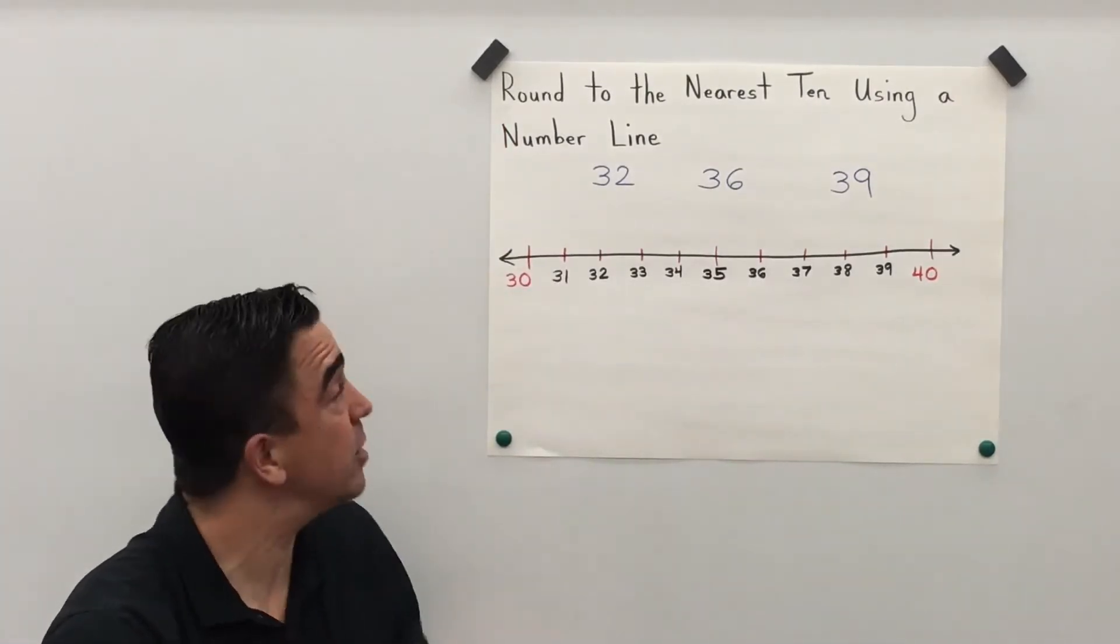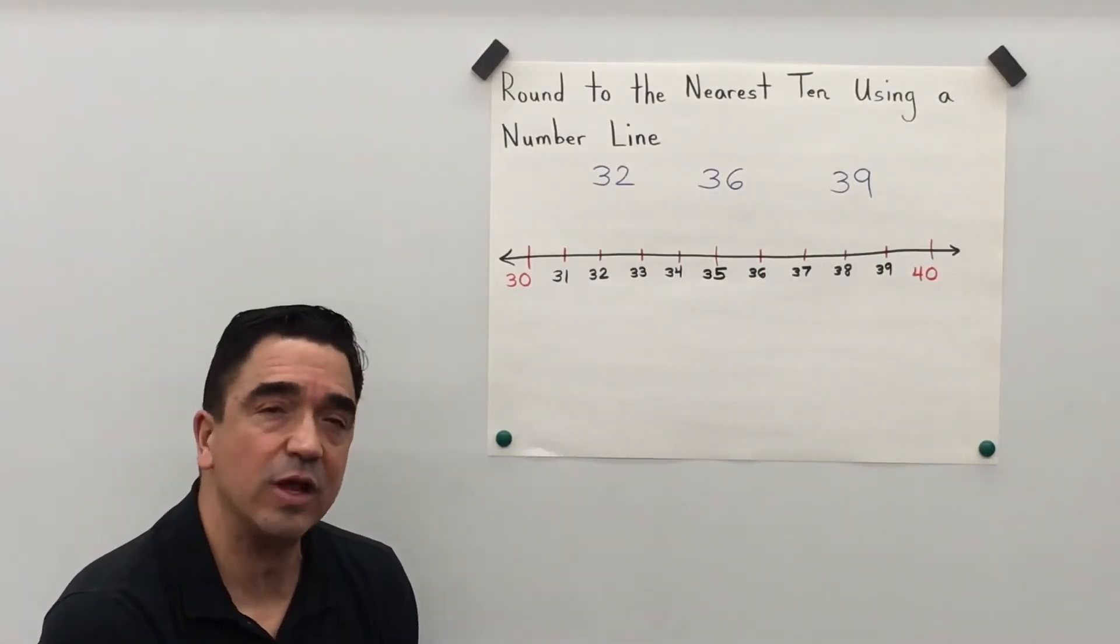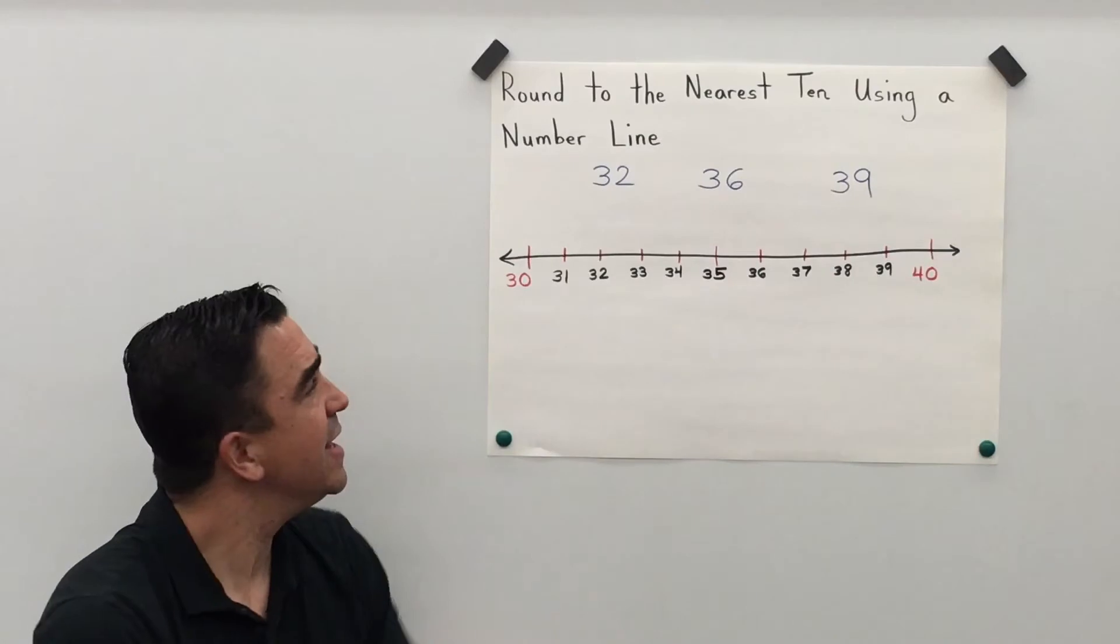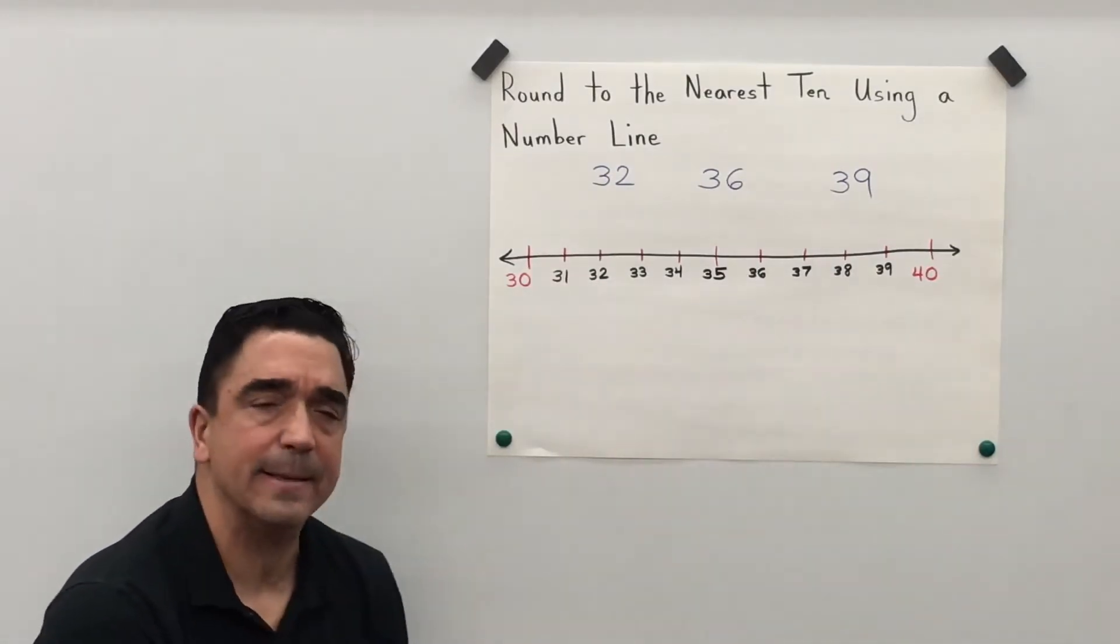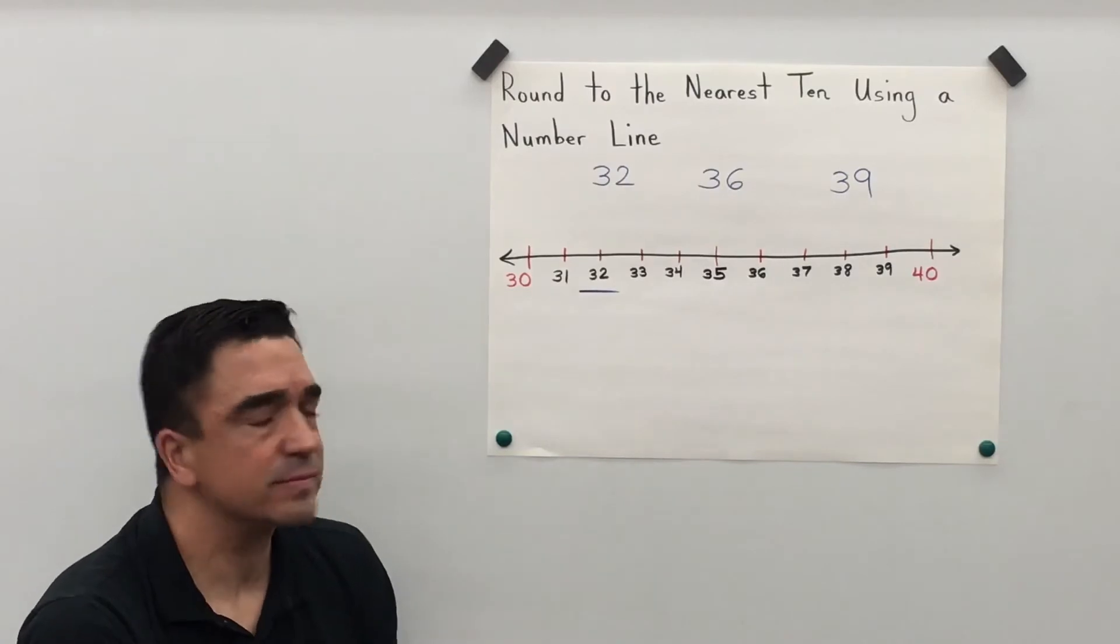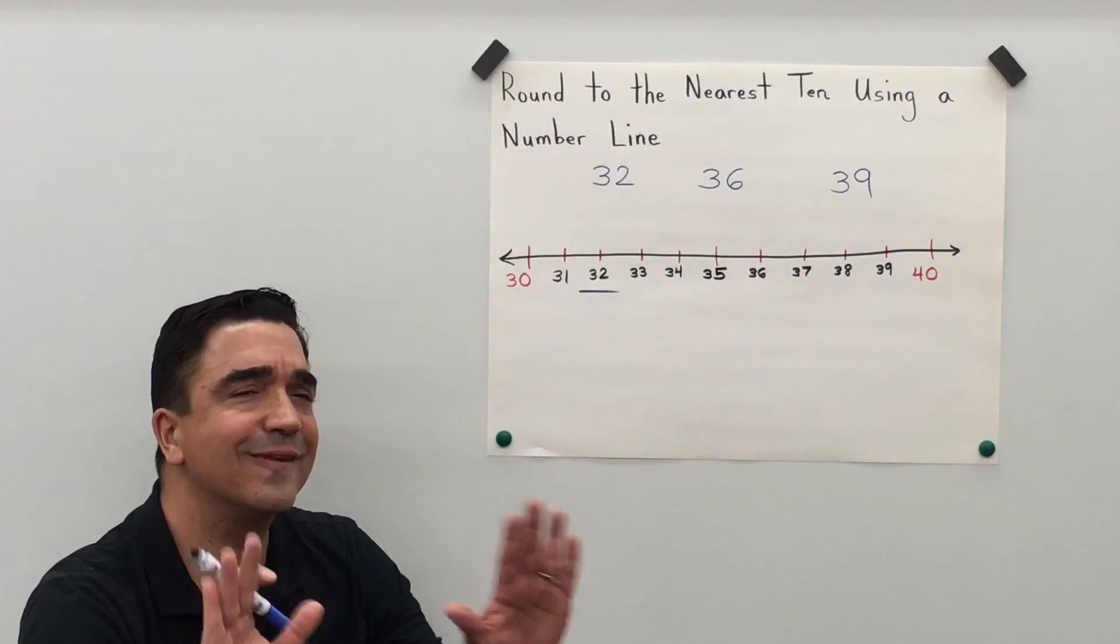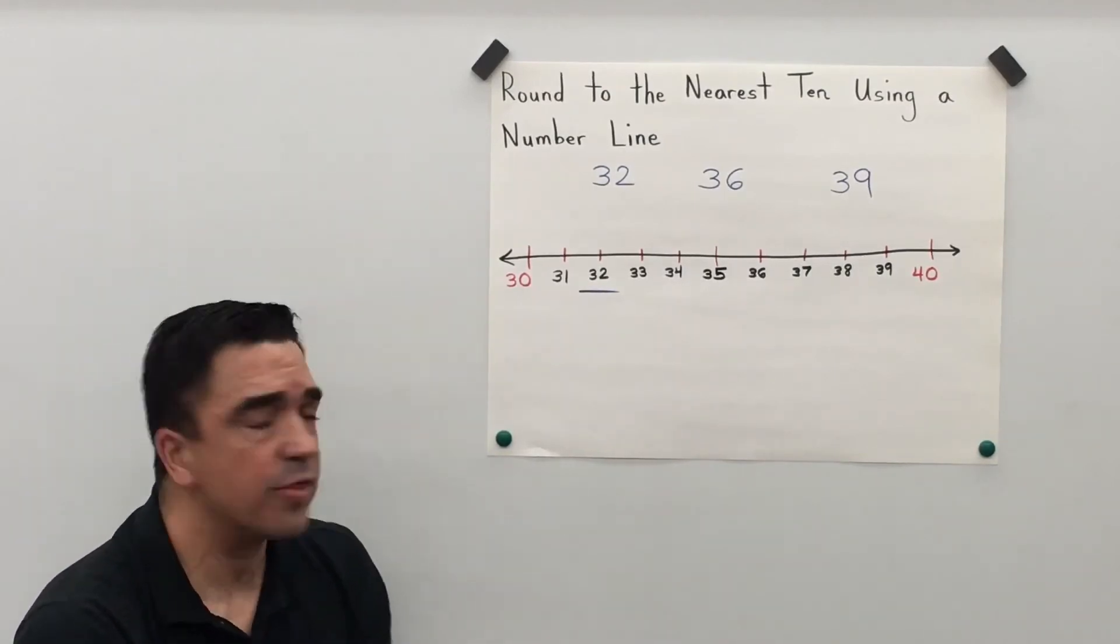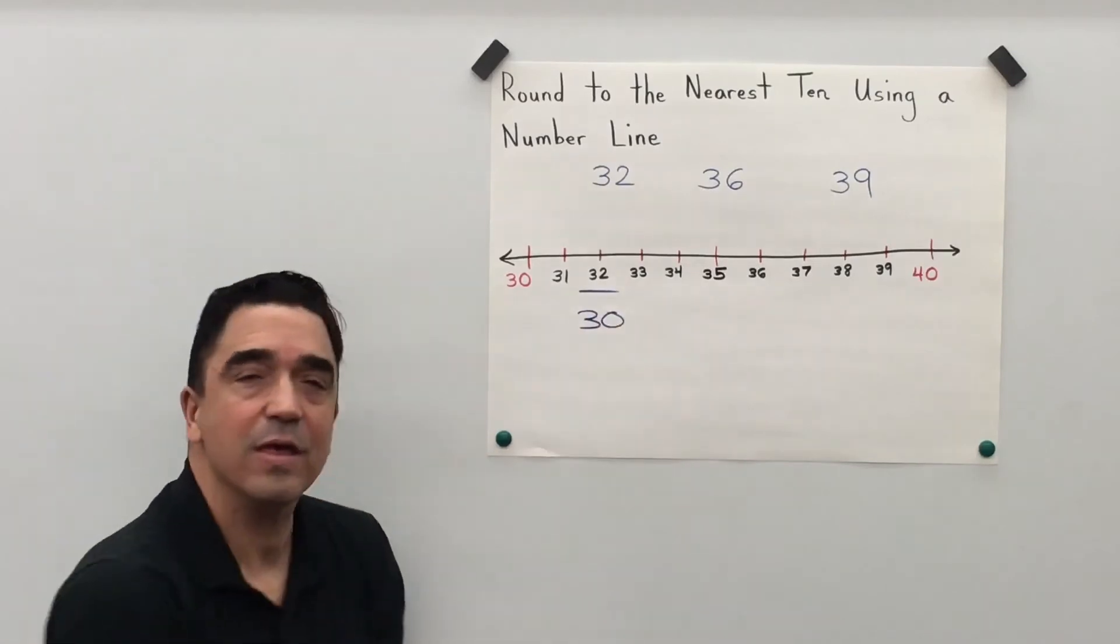Alright, well let's get started with our first number which is 32. Well let's take a look at this number line. We have 30 and we have 40. Is 32 closer to 30 or to 40? Well there it is right there. And I know the 2 is going to tell the 3 to stay the same. So 32 is closer to 30.